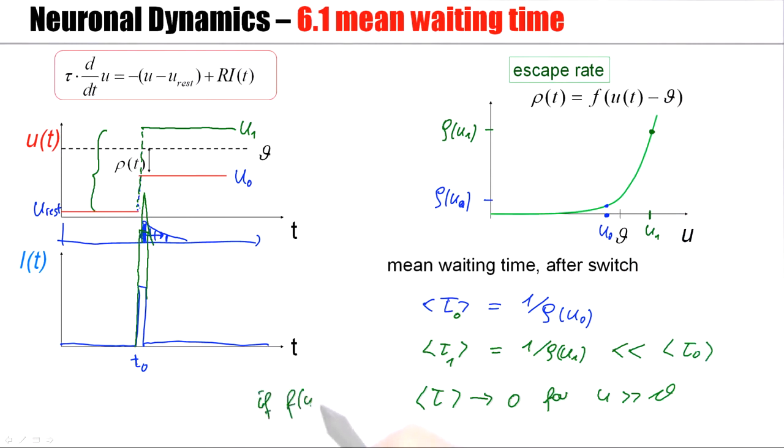So the mean waiting time goes to 0 for U much larger than θ if this function f(U - θ) goes to infinity. If this function explodes, then the mean waiting time is very short.